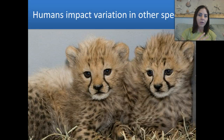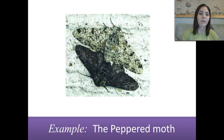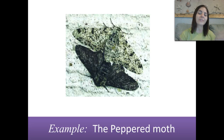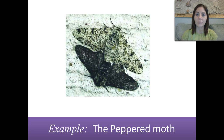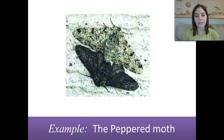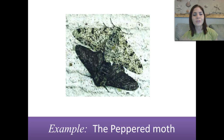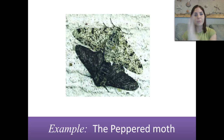Moving along — we as humans impact variation in other species quite drastically at times. One of the most common examples is the peppered moth. Before the Industrial Revolution, everything was clean, so white moths were selected for because they blended into the tree bark; black moths were selected against because they were more visible to birds. Fast forward — we created tons of pollution, smog, and soot, which covered all the tree bark. Now the white moths popped out, birds ate the white moths, and the black moths are the ones being selected for while the white moths are selected against.